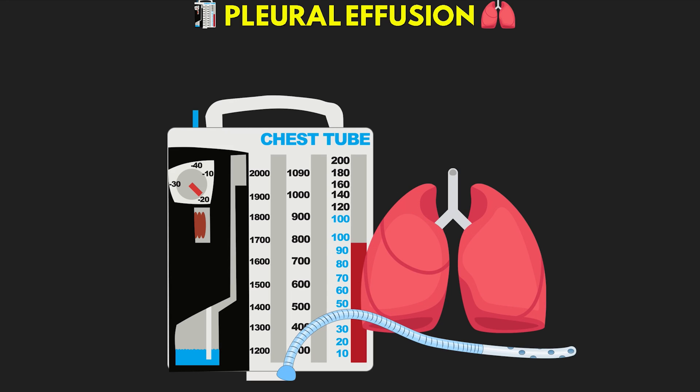Continuing the review for the chest tube series and talking about the different disorders that disrupt the pleural space. In this lesson we finish out these disruptions by quickly covering the pleural effusion.